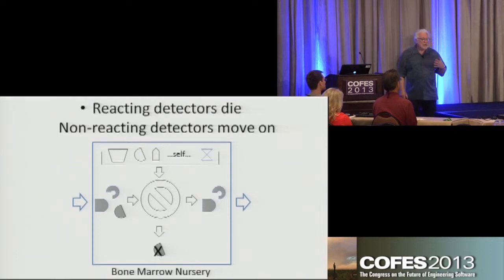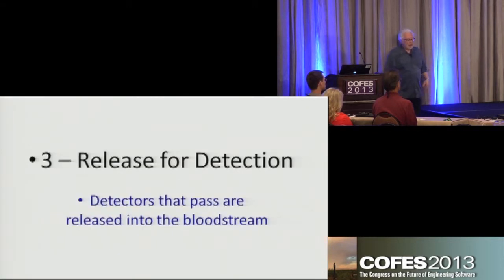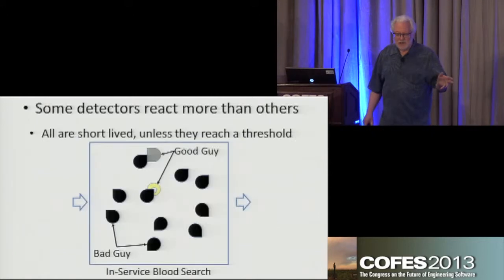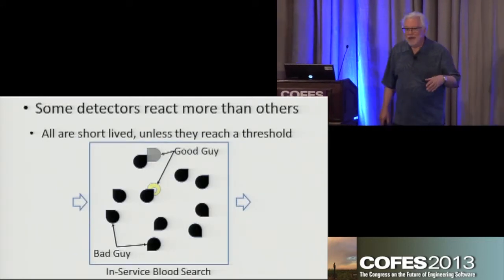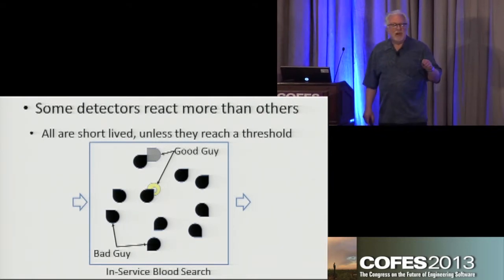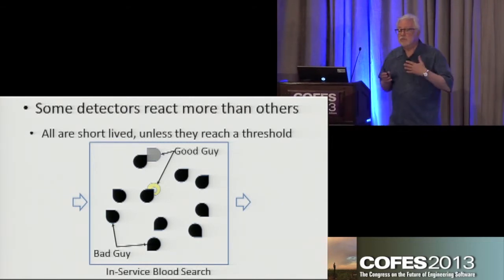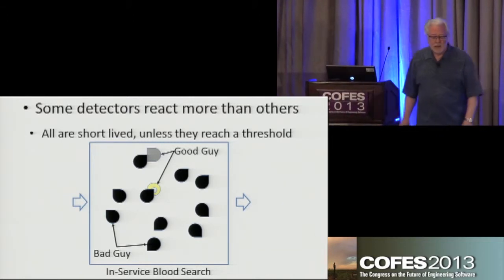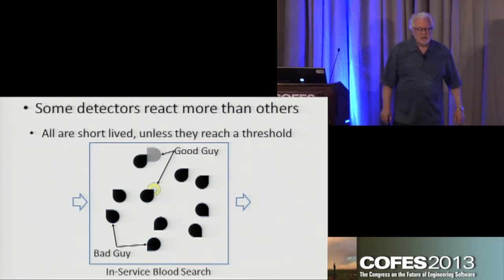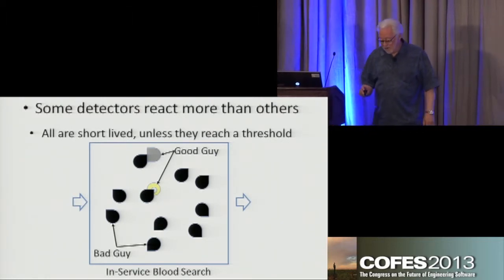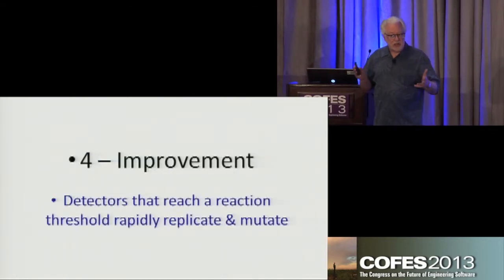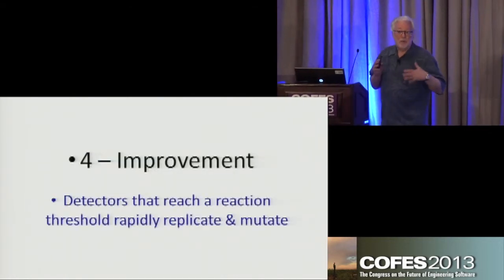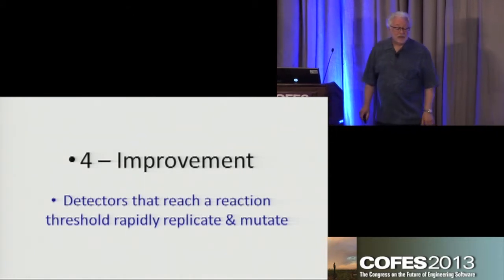Finally, we release them for detection into the bloodstream. What we see here are the bad guys in black and the good guys in yellow and gray. We've got a gray kind of match, but it's not nearly as good as the yellow kind of match, which has more surface area and contact. The yellow guy is past a certain threshold of affinity.